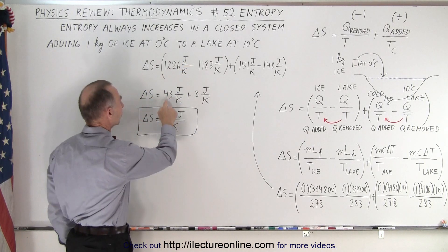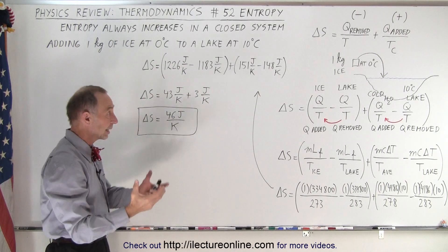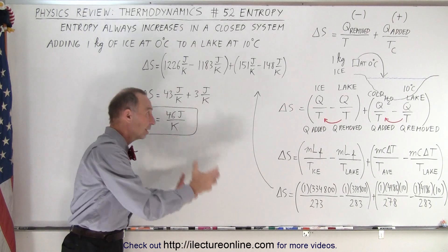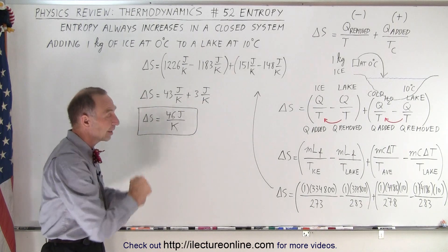and so we end up at 43 plus 3, or 46 joules per Kelvin. That is the change in entropy by taking 1 kilogram of ice at 0 degrees Celsius and throwing it into a large lake, which is at 10 degrees Celsius. And that is how it's done.